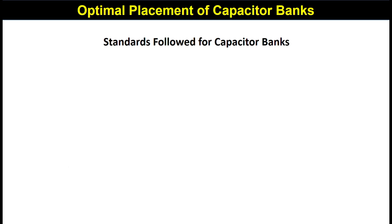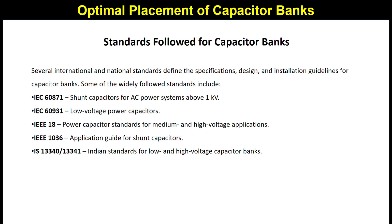Now, the standards followed for capacitor banks. Several international and national standards define the specifications, design, and installation guidelines. These include IEC 60871 for shunt capacitors for AC power systems above 1 kV, IEC 60831 for low voltage power capacitors, IEEE 18 for power capacitors for medium and high voltage applications, IEEE 1036 as the application guide for shunt capacitors, and IEC 13340 and 13341 as the Indian standard for low and high voltage capacitor banks.